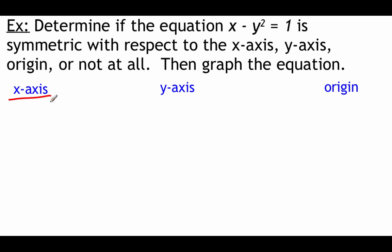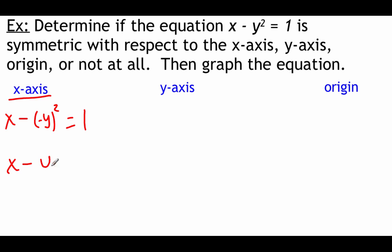Let's start with x-axis symmetry. We replace y with -y: x - (-y)² = 1. Since squaring a negative gives a positive, (-y)² = y², so we get x - y² = 1 — exactly the same equation we started with. That tells us this equation has x-axis symmetry.